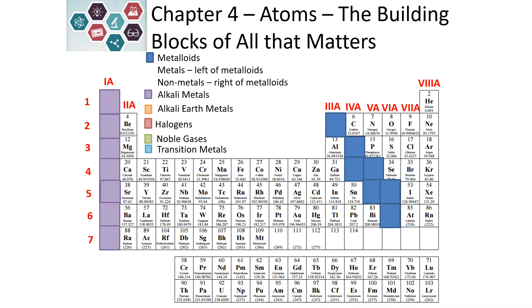Our alkali metals are in the first column of the periodic table. These are very reactive metals and are not found as the element in nature. The alkali earth metals are in column two — a little less reactive.